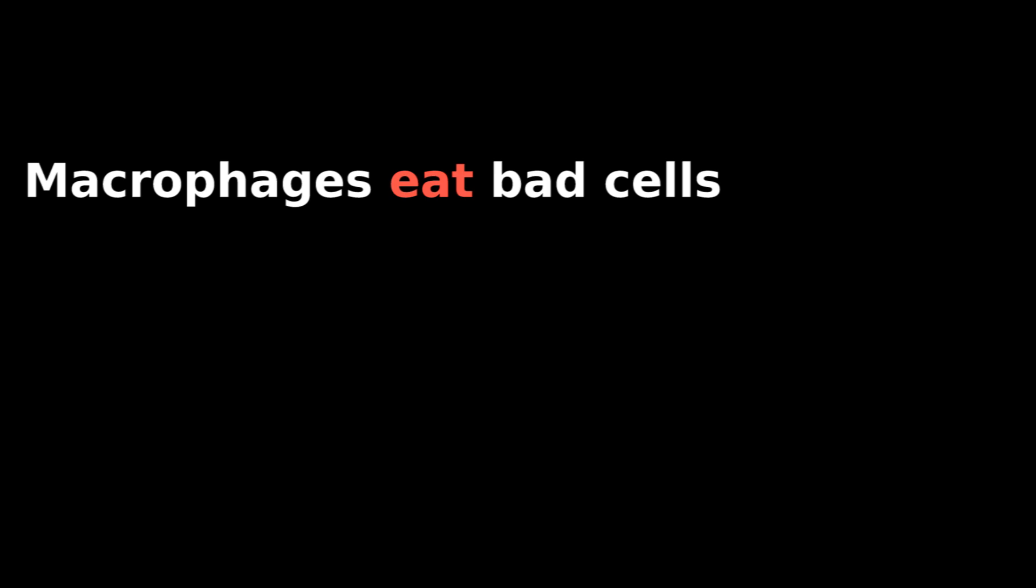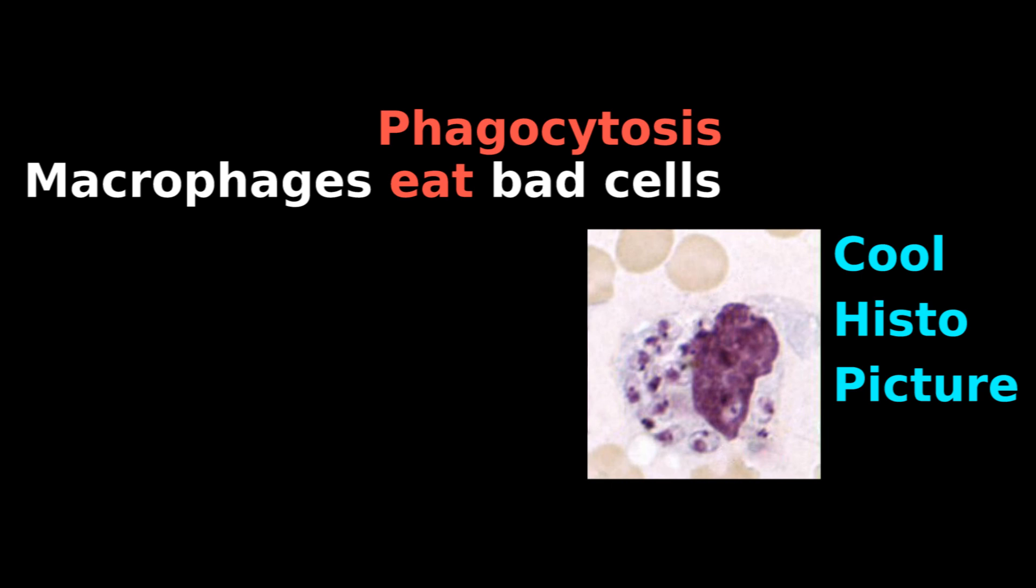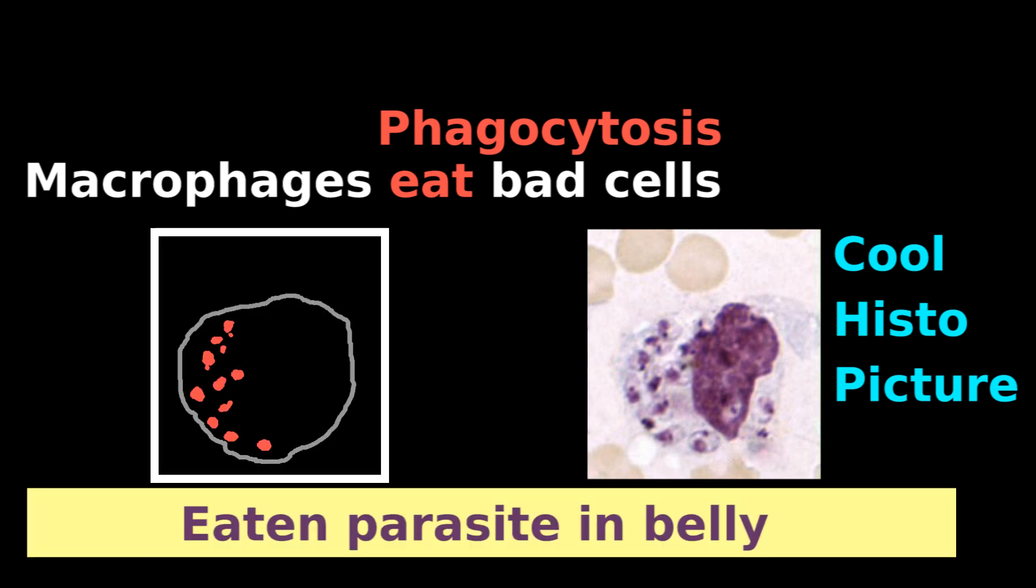Macrophages are known primarily for eating stuff, and cool histology pictures show macrophages in the middle of this phagocytosis, like this macrophage with parasitic protozoa in its belly.